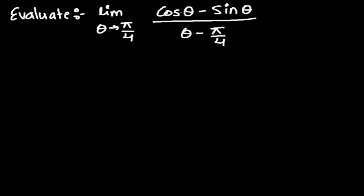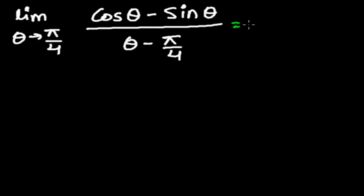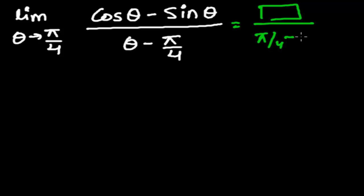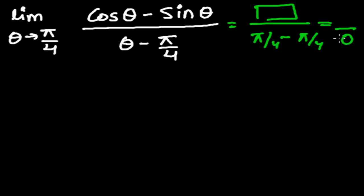If you simply plug in the value of theta, that is pi by 4, in the denominator you will get pi by 4 minus pi by 4, which is zero. Whenever we get zero in the denominator, that becomes an undefined value.